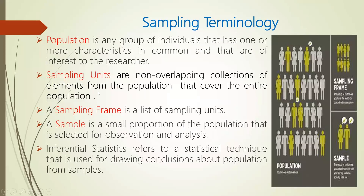Population is any group of individuals that has one or more characteristics in common and that are of interest to the researcher. The population is the big group of individuals with common characteristics, and it depends on the interest of the researcher. Next is sampling unit — these are non-overlapping collections of elements from the population that cover the entire population. In a sampling unit, you are not going to take the same person in multiple groups.